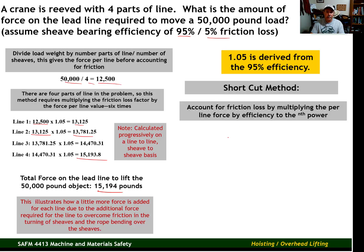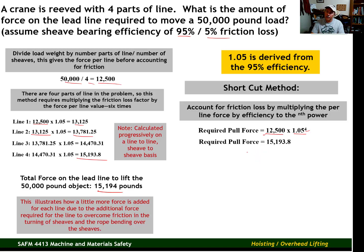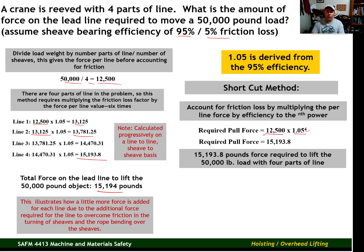Let's look at the shortcut method. We're multiplying the per-line force by the efficiency factor to the nth power. Our per-line force is 12,500 times 1.05 — the friction loss factor — taken to the fourth power because there are four parts of line. When we do that multiplication, our required pull force is 15,193.8 pounds, just like the long method.